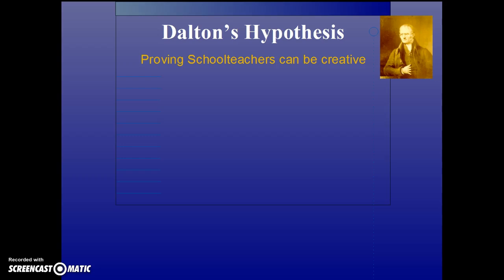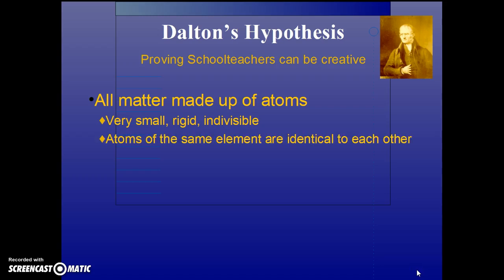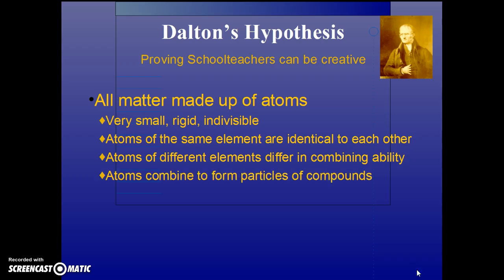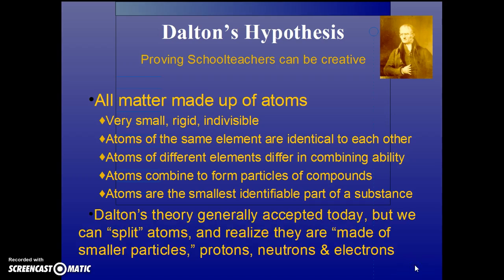Dalton came along in the early 19th century and suggested that all matter is made up of atoms. This doesn't go beyond Democritus, but he is doing this from experiments. He said that the atoms are very small, rigid, and can't be broken up. Atoms of the same element are identical to each other, and that's why the mass ratios tend to be always the same. Atoms of different elements differ in their combining ability, and atoms combine to form particles of compounds. He said that atoms are the smallest identifiable part of any substance.